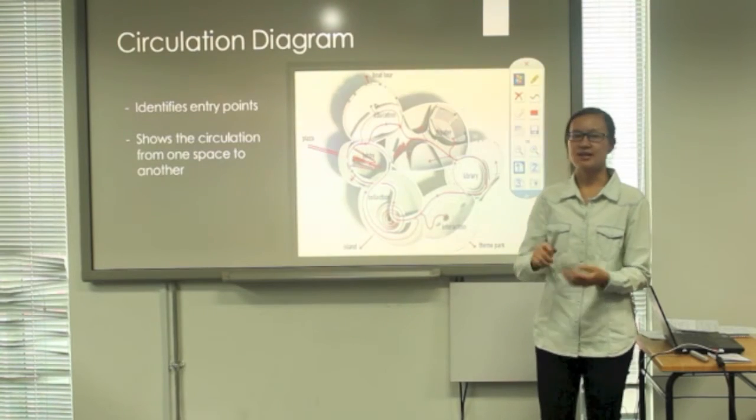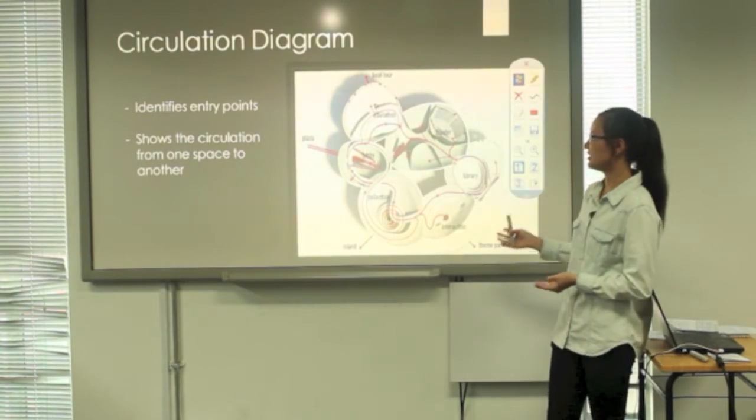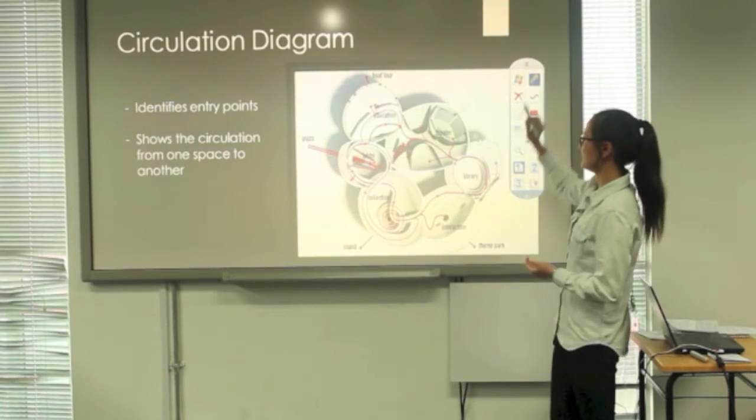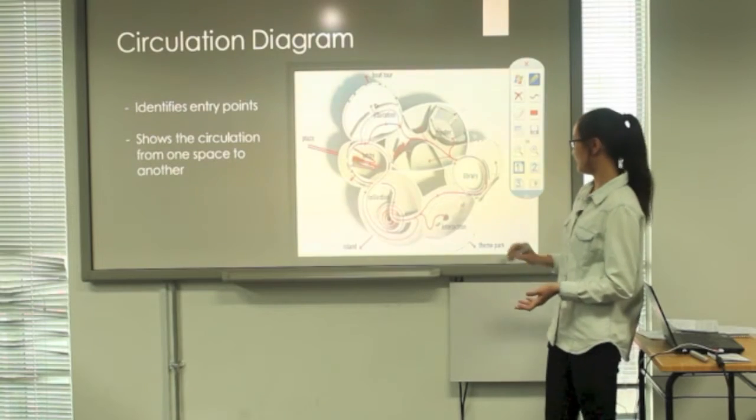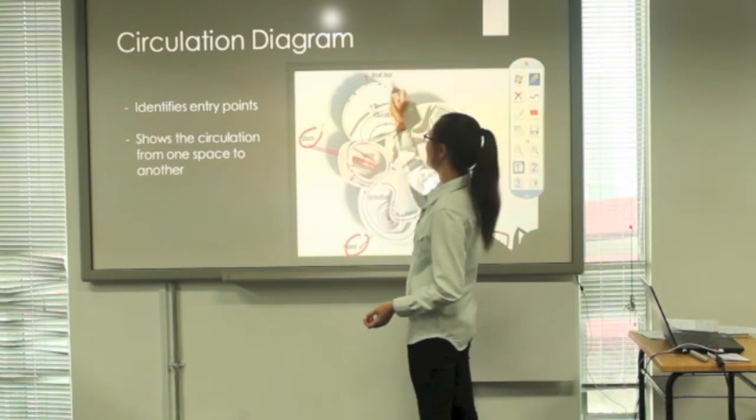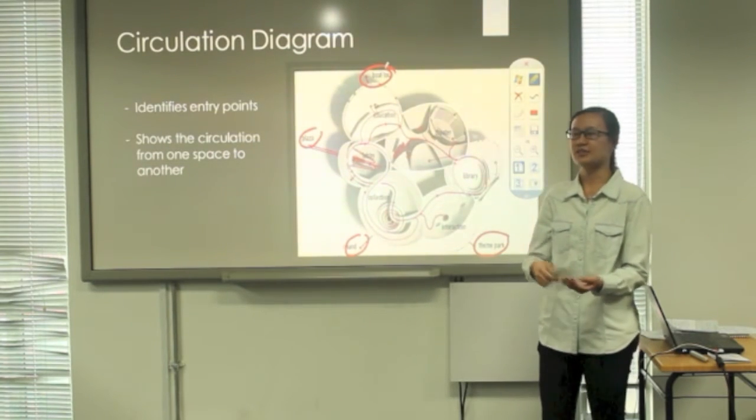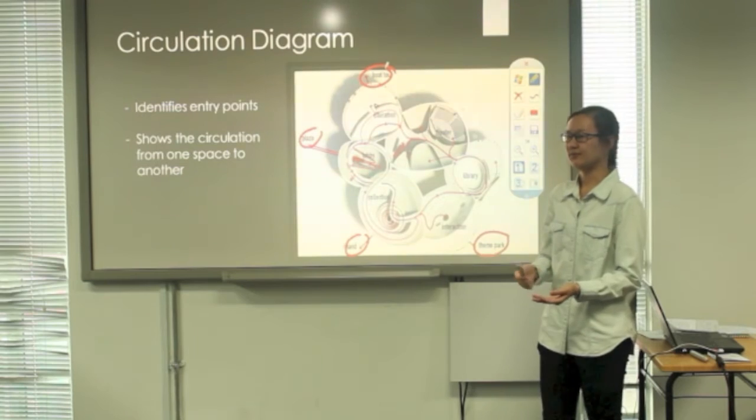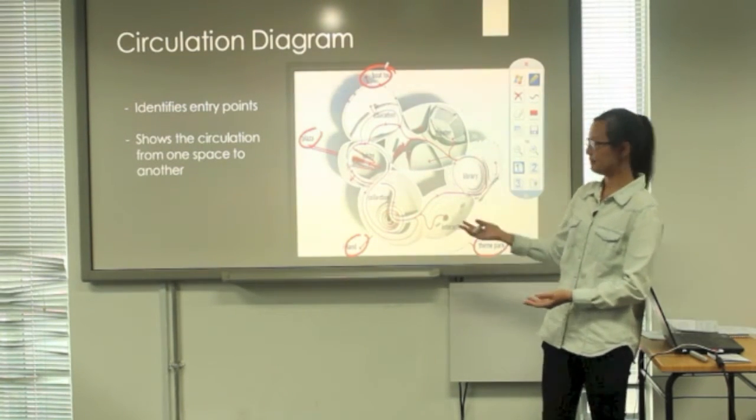Next up is circulation diagram. Circulation diagram identifies the entry point. It shows where the entrance and exit are in the building. As for this diagram, the exit and entrance of the building are the theme park, the island, the plaza, and the boat tour. The circulation diagram also shows the circulation of one space to another. It shows how people move around in a building space.